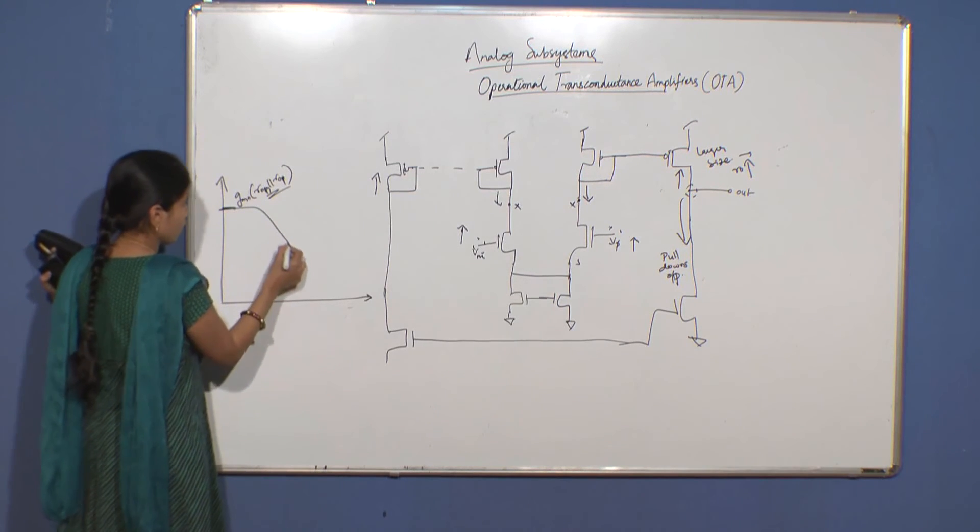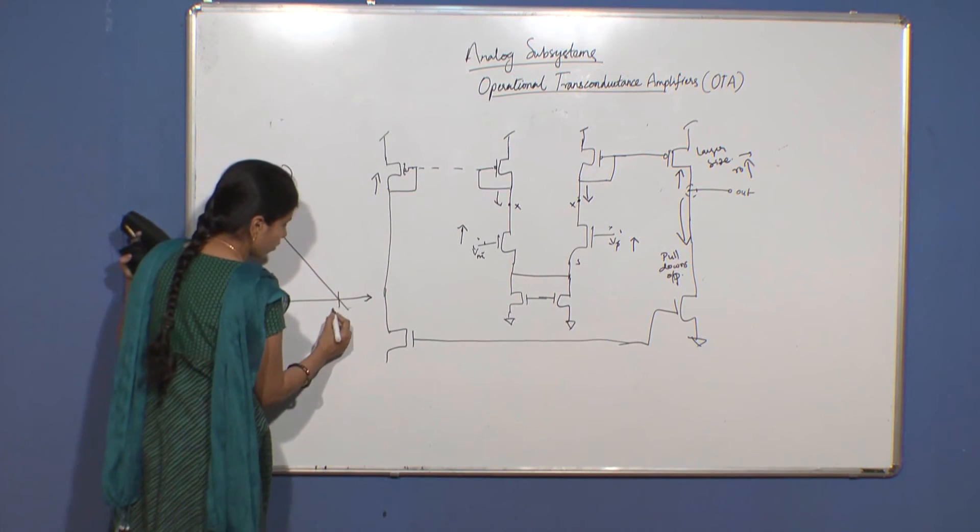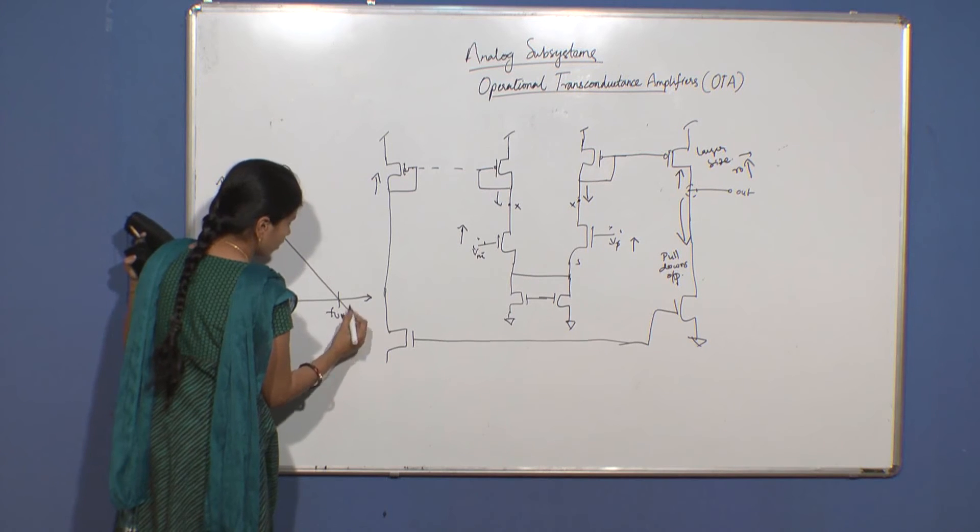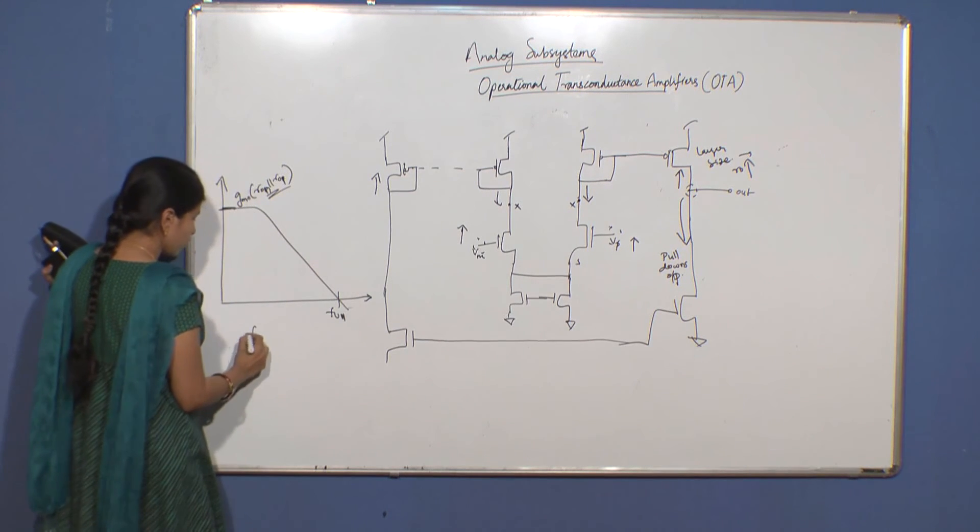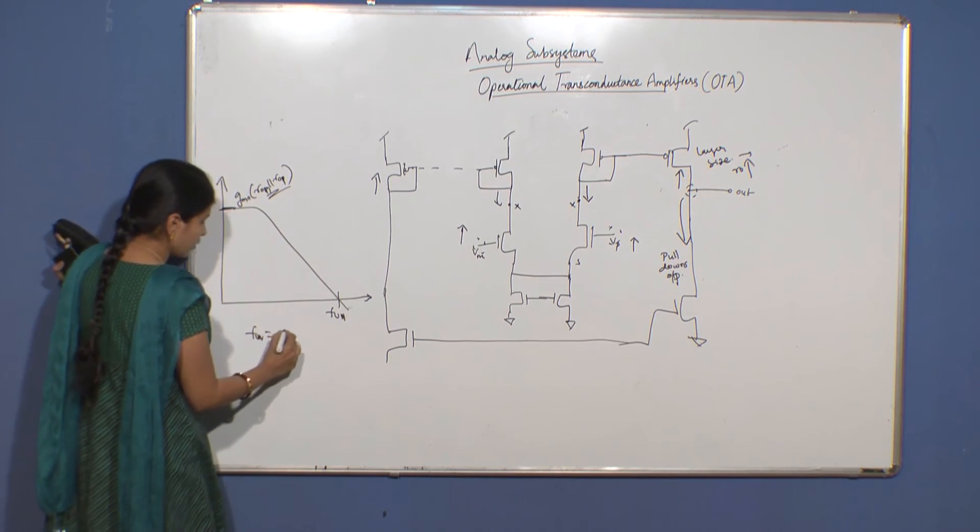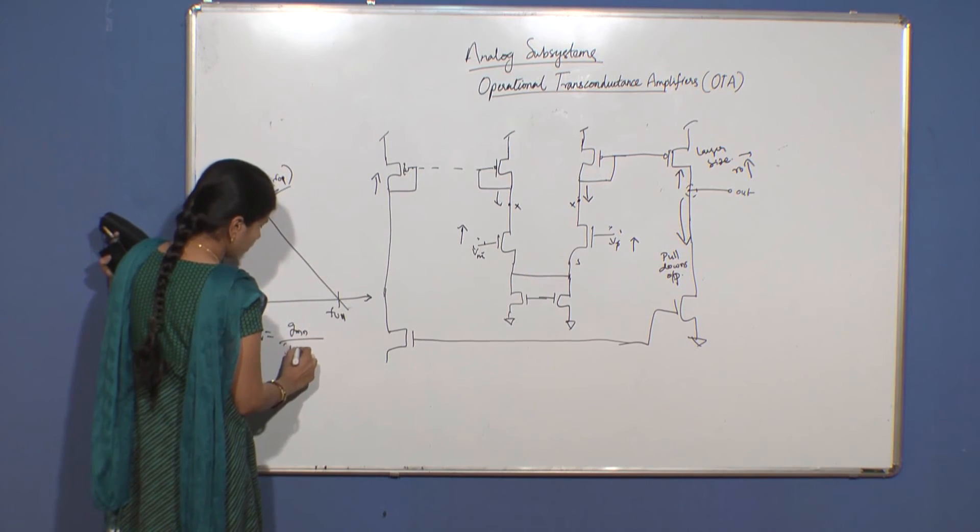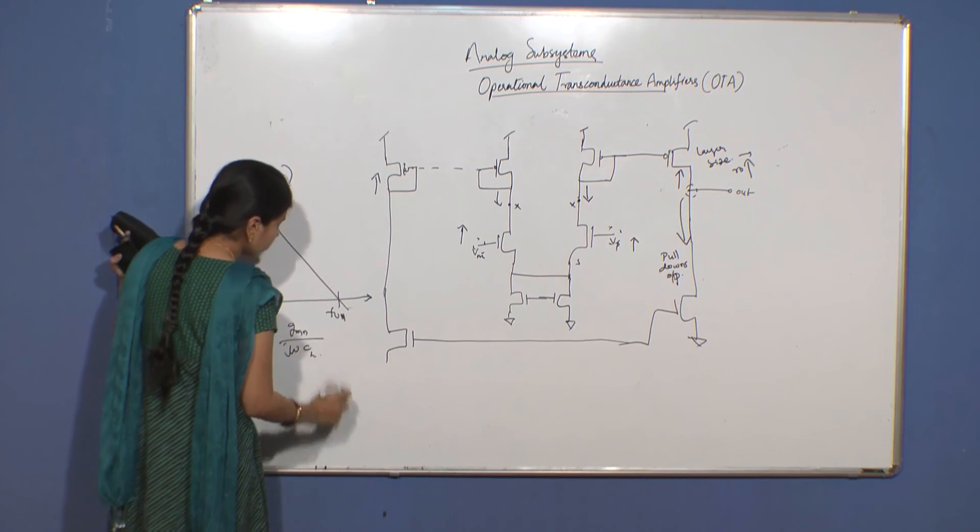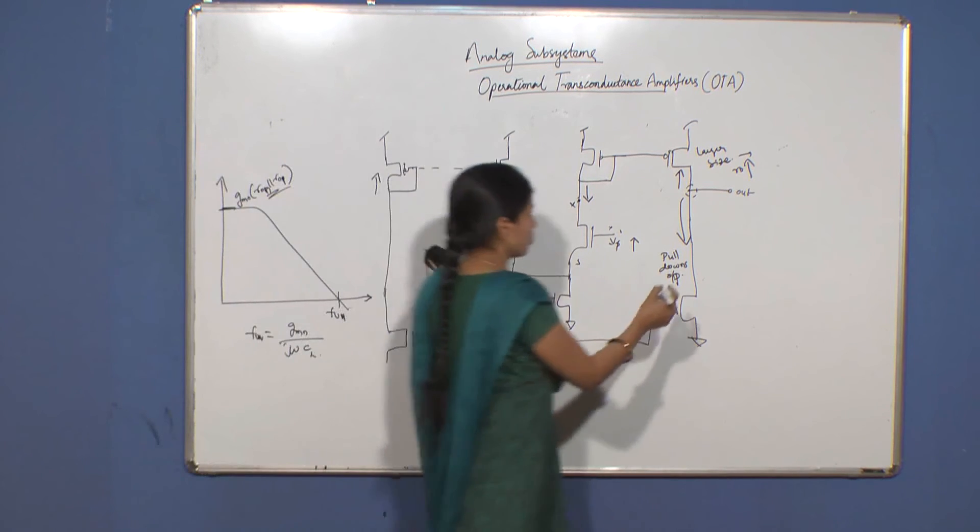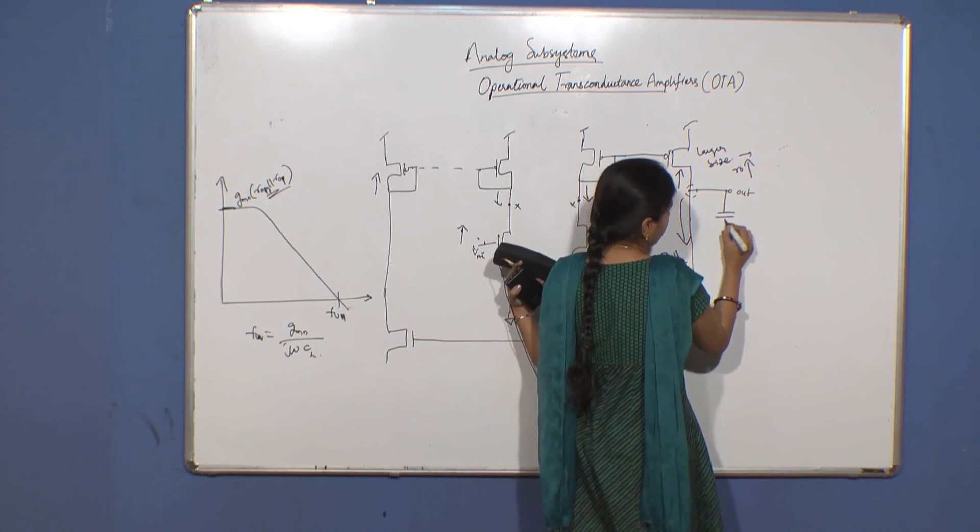In a similar fashion, you have your gain falling down till unity gain frequency. The unity gain frequency is given by the same thing: gmn by omega CL. You have an output capacitor here.